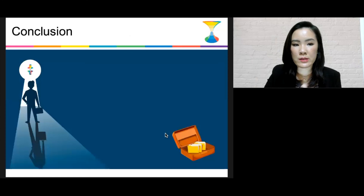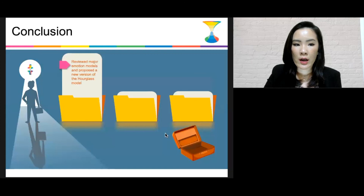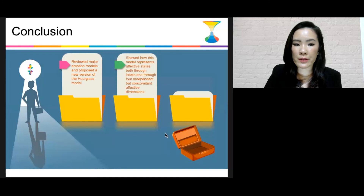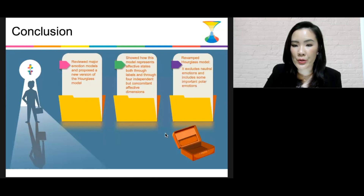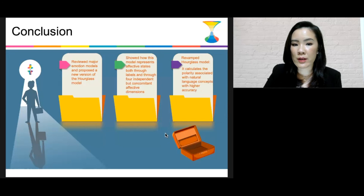In conclusion, we reviewed major emotion models and proposed a new version of the hourglass model. We also show how this model represents affective states across four levels and four independent but concomitant affective dimensions. The revamped hourglass model now provides a better color representation of emotions, excludes neutral emotions and includes important polar emotions, better categorizes emotions to ensure antithetic emotions are mirrored, and calculates the polarity associated with natural language concepts with higher accuracy.